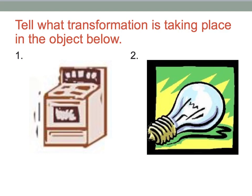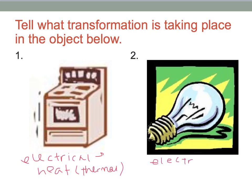Let's work out these energy transformations. The first one is obvious — we start with electrical because it has a plug, and we end up with heat, or thermal. For the light bulb, you can't turn it on by just holding it; you need electricity. So the transformation starts with electrical and ends with light — you can also call that radiant or electromagnetic.